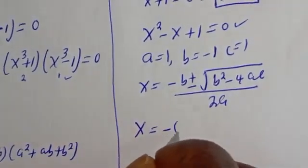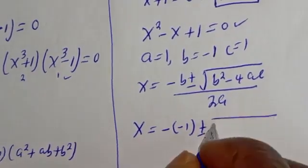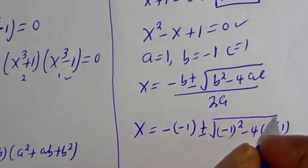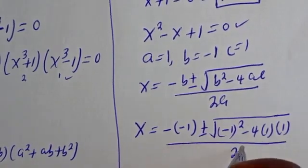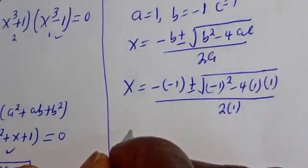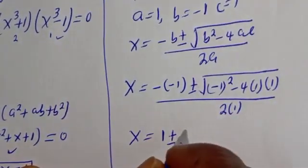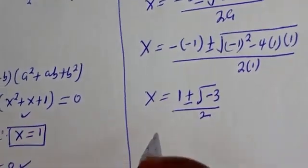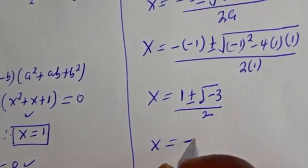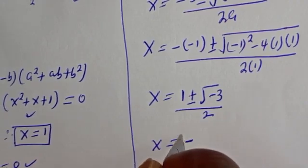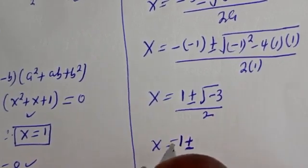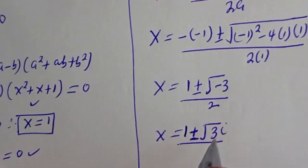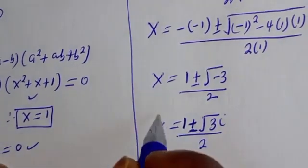Substituting into the quadratic formula: s equals minus (minus 1) plus or minus square root of (minus 1) squared minus 4 times 1 times 1, over 2 times 1. This gives s equals 1 plus or minus square root of 1 minus 4, over 2, which equals 1 plus or minus square root 3 i, over 2.